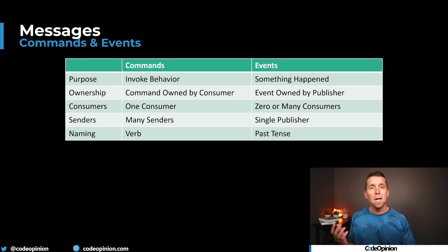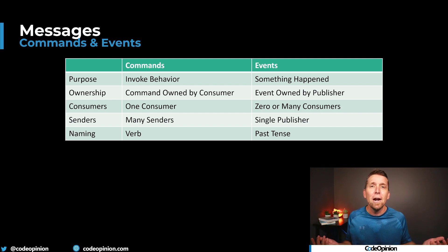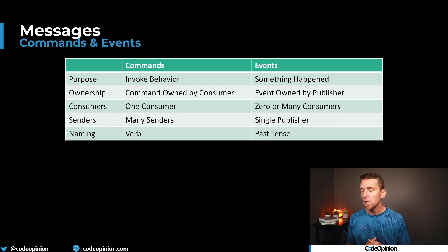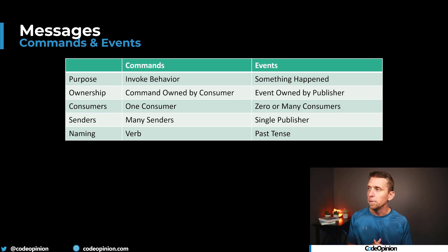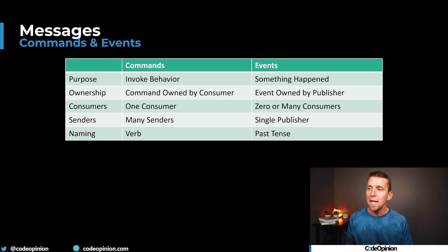With events, because you're decoupling producer and consumer, the producer doesn't care or know who's actually consuming it — there could be zero or many different consumers. Who sends a command? There could be many different senders. Who publishes an event? There's one publisher when something occurs within that logical boundary. In naming, commands are generally verbs — actions you want to perform. Events, as we're mentioning, are past tense — what has happened.